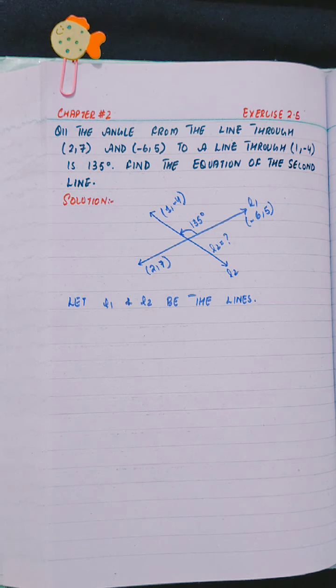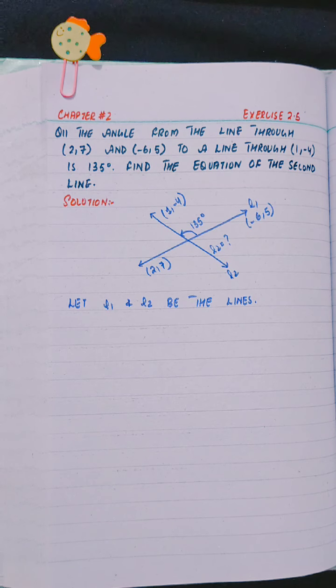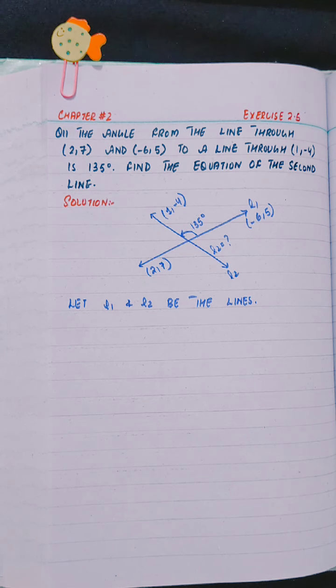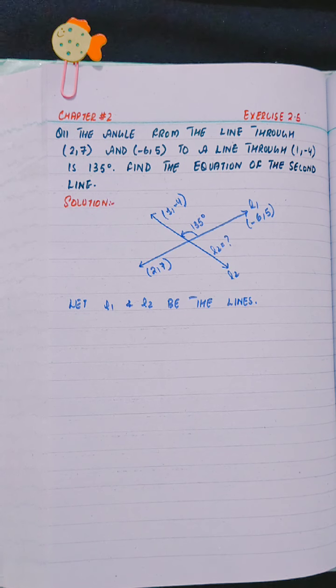Hello everyone, this is Rabia Aslam. In this video we will solve question number 11 from exercise 2.5 chapter number 2. The angle from the line through (2,7) and (-6,5) to a line through (1,-4) is 135 degrees. Find the equation of the second line.